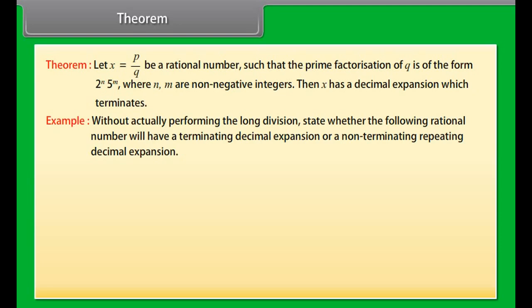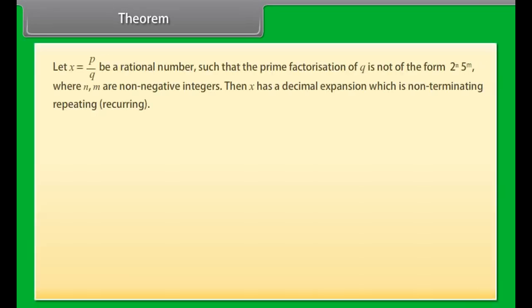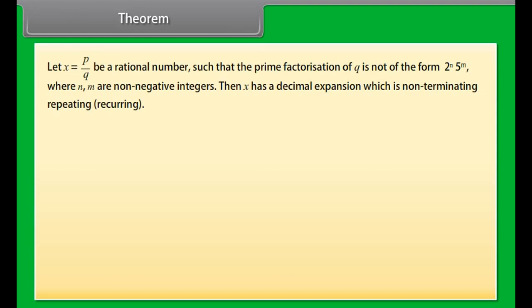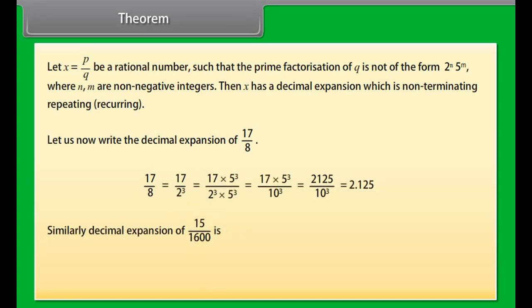A rational number of the form P upon Q, where Q is of the form 2 raised to the power N × 5 raised to the power M, can be converted to an equivalent rational number of the form A upon B, where B is a power of 10. The decimal expansion of such a rational number terminates. One more thing to note: a terminating decimal can also be thought of as being followed by an infinite sequence of zeros, so in this sense, even terminating decimals are actually periodic.